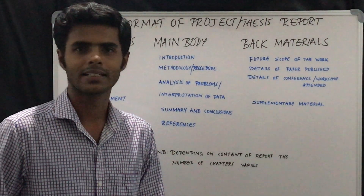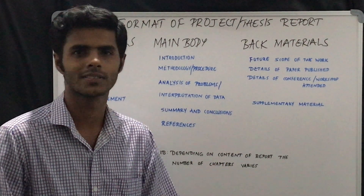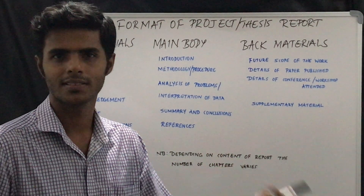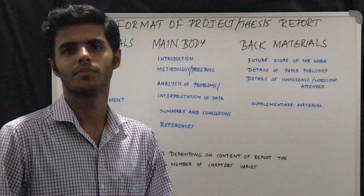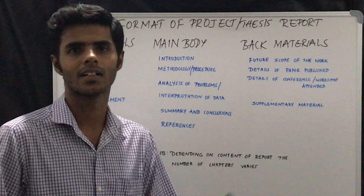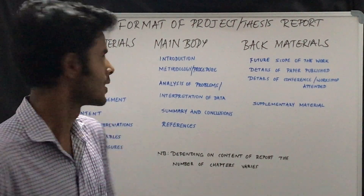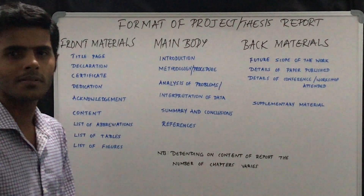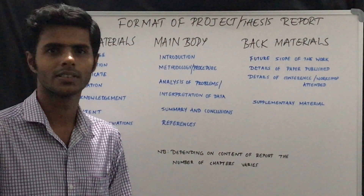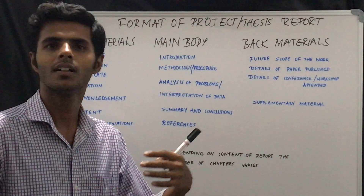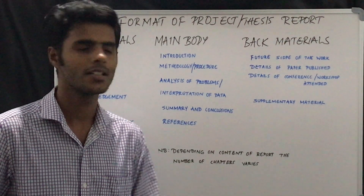The second one will be the declaration, saying that you have done this project work under the guidance of a professor, research scientist, or at a particular industry, and that you have not performed this work anywhere else for the purpose of any other project or fellowship. The third one will be the certificate, which you can get from the industry or from the guide under whom you have done the project.